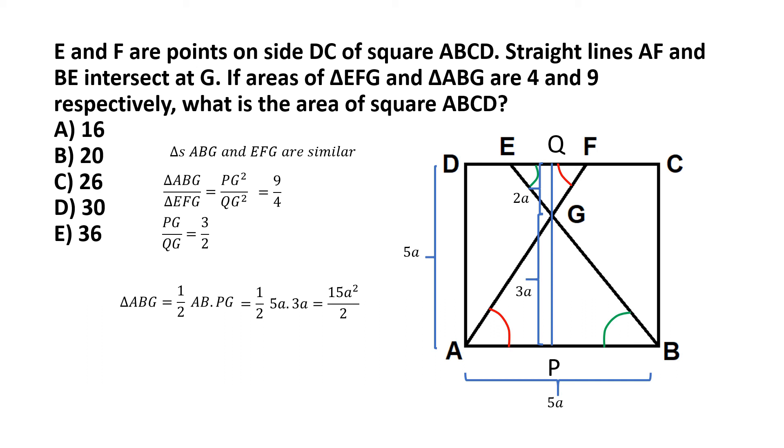But triangle ABG, its area is given as 9, so we can equate this to 9. And from this we can solve for a². And a² comes to 9 multiplied by 2 by 15, which when you reduce the numerator and denominator by canceling out the common factor 3, comes to 6 by 5. So a² is 6 by 5.